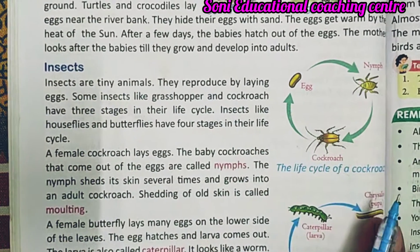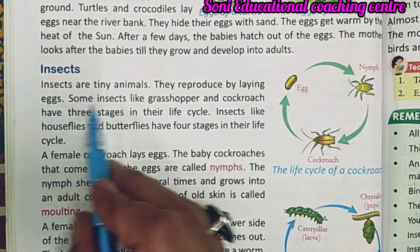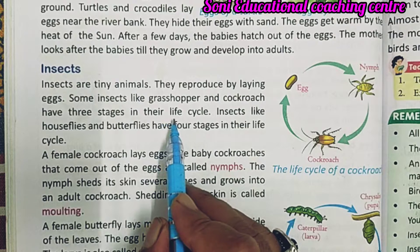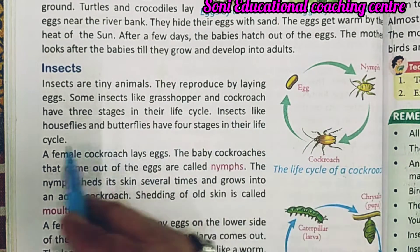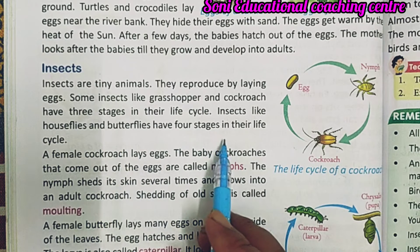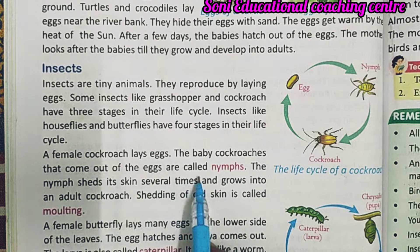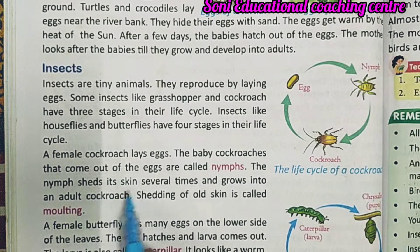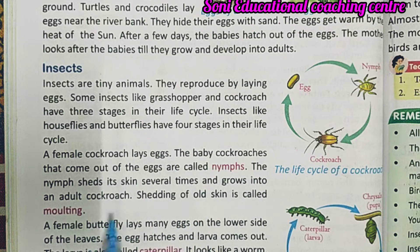Insects are tiny animals that reproduce by laying eggs. Some insects like grasshopper and cockroach have three stages in their life cycle — अंडा, फिर nymph, और फिर adult cockroach। A female cockroach lays eggs. The baby cockroaches that come out of the eggs are called nymphs. The nymph sheds its skin several times and grows into an adult cockroach.